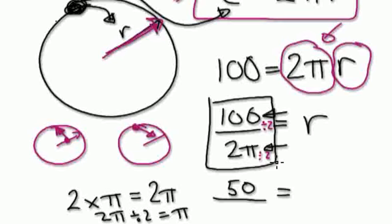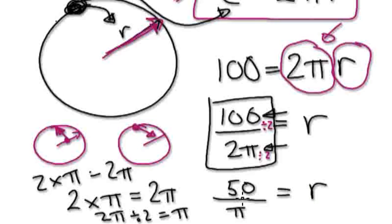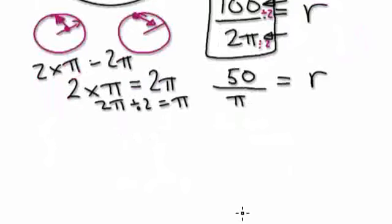It basically, yeah, so 2π divided by 2 is π. So the radius is 50 over π.